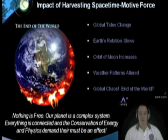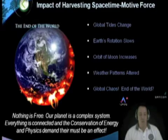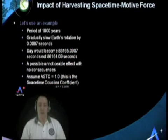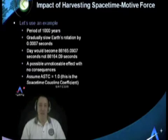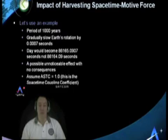If we harvest space-time motive force, some of the impacts would be: global tides would change, the Earth's rotation would slow, the orbit of the Moon would increase, and the weather patterns of the Earth could be altered. Would it be global chaos and the end of the world? Absolutely not, or at least that's what most experts agree. For example, over the next 1,000 years, we could gradually slow the Earth's rotation by just 7 ten-thousandths of a second, so that the day becomes 86,164.09 seconds — an almost unnoticeable effect with no consequences.